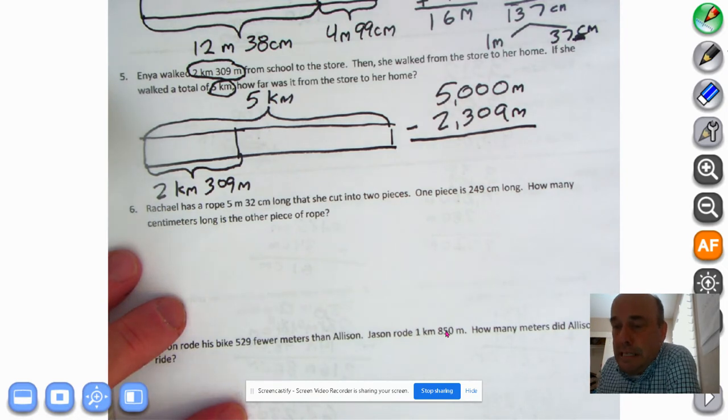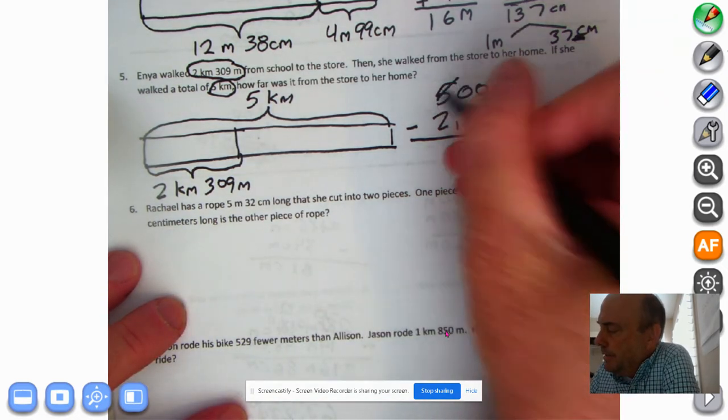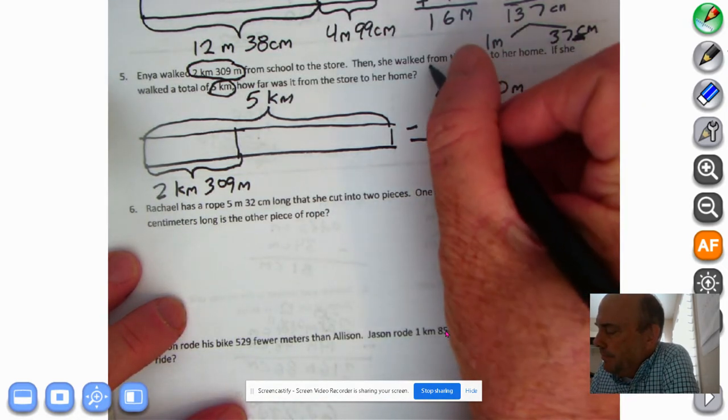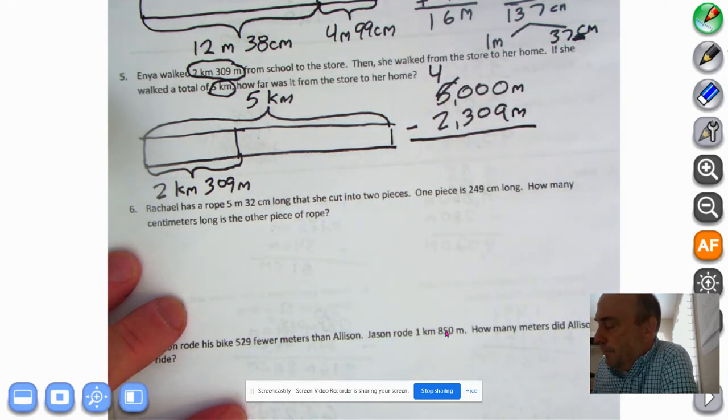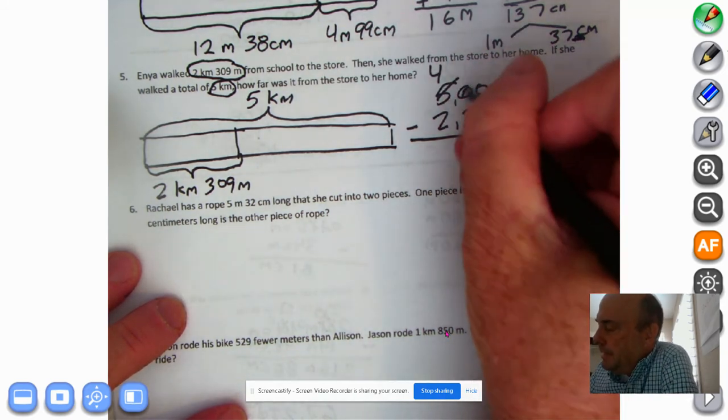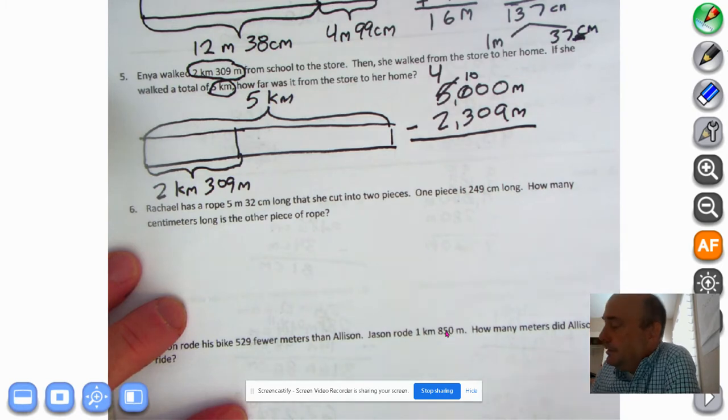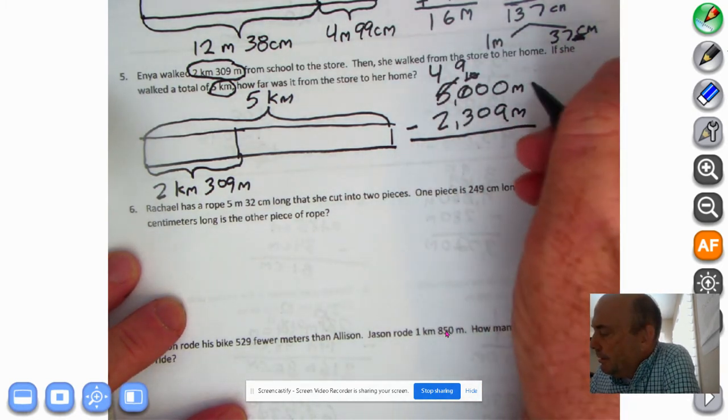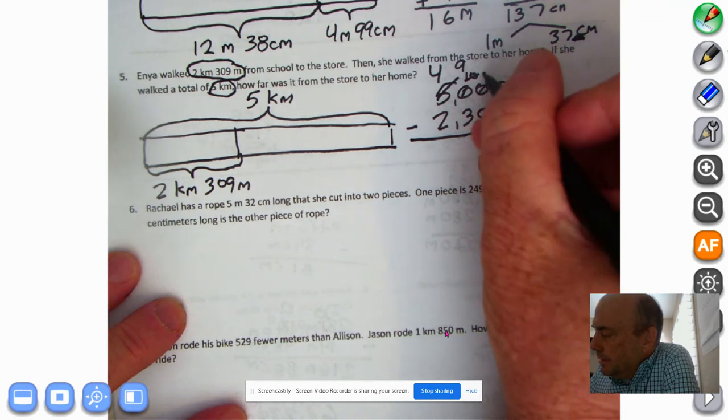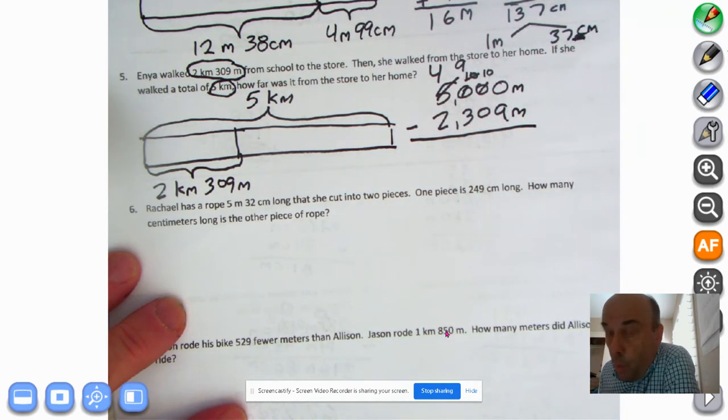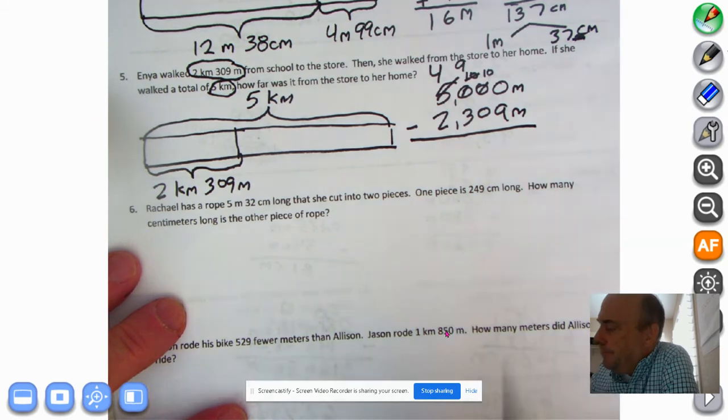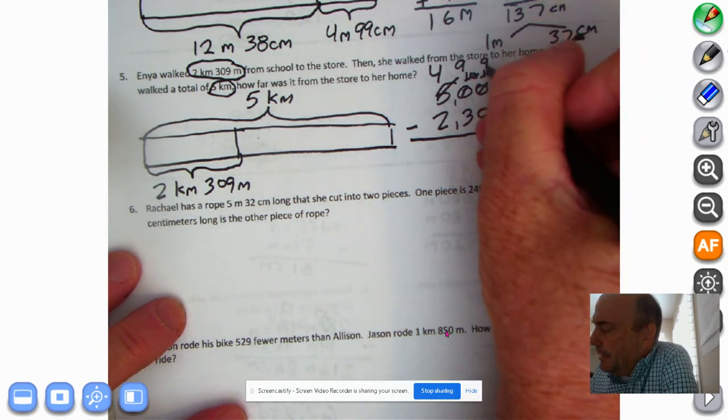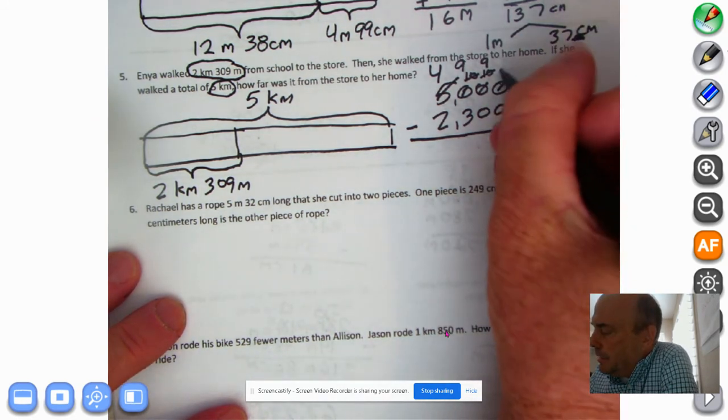Time to do a little decomposing. And what we're going to do is this will become 4,000. This will become 10 hundreds or 1,000. We'll decompose it to 9 hundreds. And we still need to do a little more decomposing. This will be 10 tens or 100. We'll decompose that. It'll become 9 tens. And then this will become 10 ones.